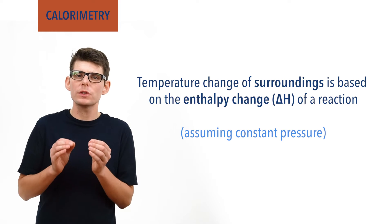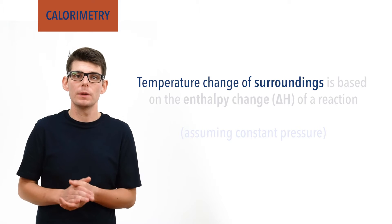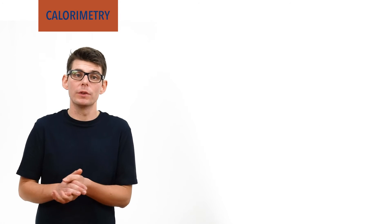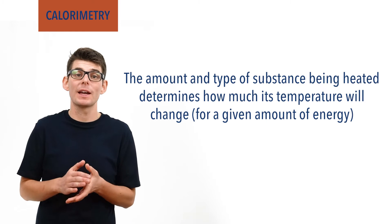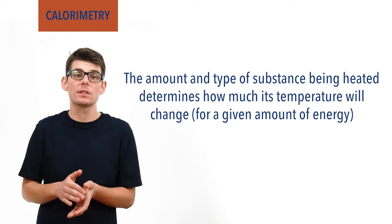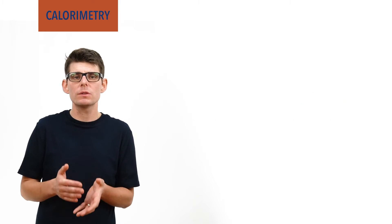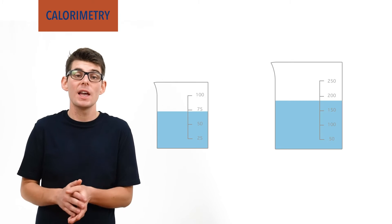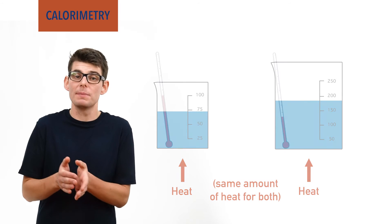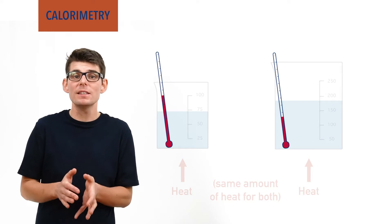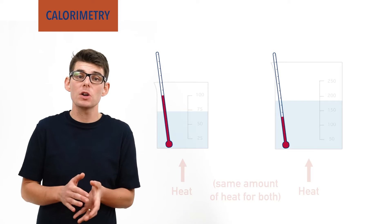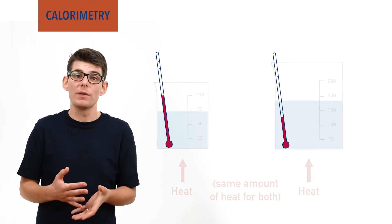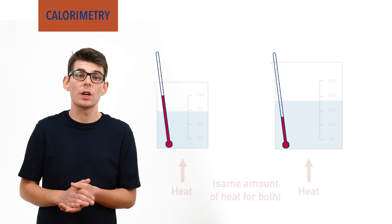It is the temperature of the surroundings that we are interested in when working with calorimetry. Temperature is related to the energy of an object — the higher its temperature, the more energy it has. The problem is that the amount and type of substance being heated has a big impact on how much its temperature changes when given a certain amount of energy. Imagine giving a small beaker of water the same amount of heat energy as a larger beaker of water — the temperature change will obviously be greater for the smaller beaker, as the heat energy increase is shared between a smaller number of particles.